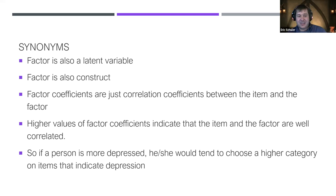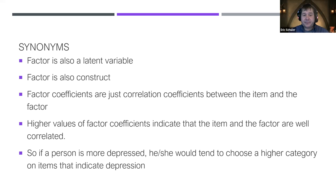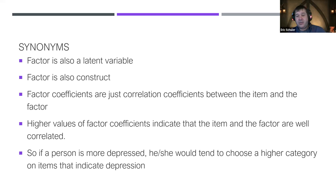When thinking about a latent variable: if a person is more depressed and we're measuring depression as our latent construct, we tend to see higher selection of higher categories on a scale. For example, if they say 'strongly agree' to 'I have a hard time going about my day' compared to 'slightly agree,' we know that's probably a higher level of depression. For confirmatory factor analysis, we're within the classical test theory realm — the idea that observed score equals true score plus some error.